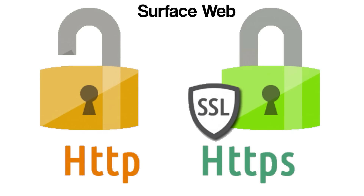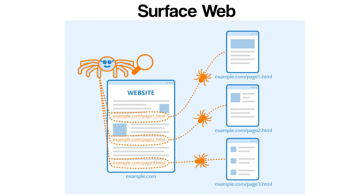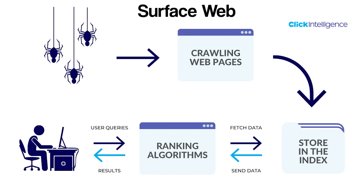Search engines deploy automated programs known as web crawlers or spiders that systematically browse the Internet and index pages based on keywords, metadata, and other elements. These indexed pages are then ranked and presented to users through search results. The process is governed by algorithms that aim to provide the most relevant content based on a user's query. Web developers and content creators often utilize search engine optimization techniques to increase the visibility of their website within the Surface Web.